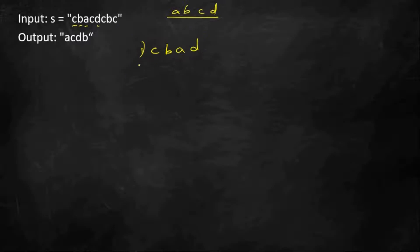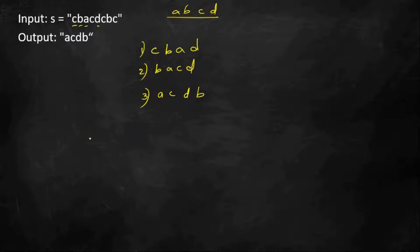The second sequence is B, A, C, D. The third sequence is A, C, D, B — ignoring C and B initially. The fourth is A, D, C, B. And the fifth is A, D, B, C. So in all these sequences I have made sure there are only unique letters and all unique letters are included.